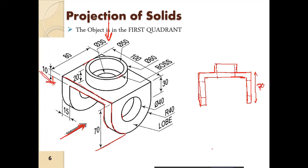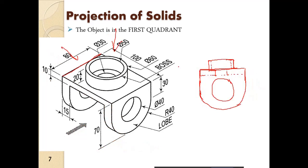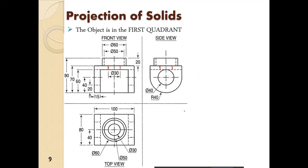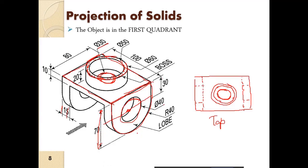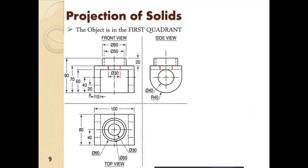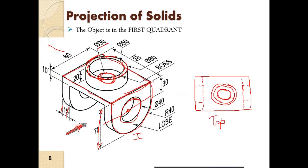We saw how we have to visualize the object using an isometric view. So an isometric view of a particular object will be given, and we have to visualize what it will look like from the front, from the side, and from the top. This is the solution of the required problem — this is the isometric view, and from that particular view we have now developed the top view, the front view, and the side view.